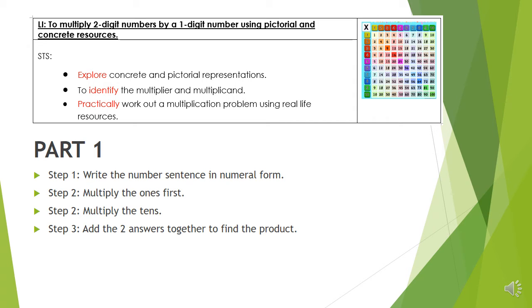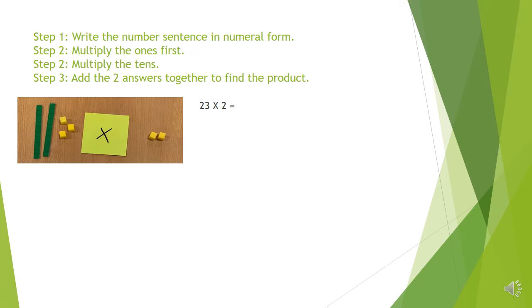So part one is going to explain how the method for multiplying twos by one digit numbers. So the first one is to write the number sentence out in its numeral form. Then we multiply the ones, then the tens and add the two answers together to find the product.